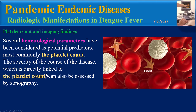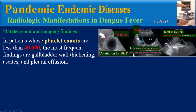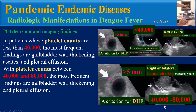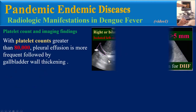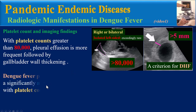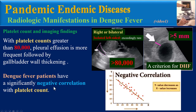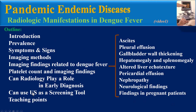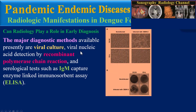Several hematological parameters have been considered as potential predictors of disease severity, most commonly the platelet count. In patients with platelet counts less than 40,000, the most frequent findings are gallbladder wall thickening, ascites, and pleural effusion. With platelet counts between 40,000 and 80,000, the most frequent findings are gallbladder wall thickening and pleural effusion. With platelet counts greater than 80,000, pleural effusion is more frequent followed by gallbladder wall thickening. What is clear is that dengue fever patients show a significantly negative correlation with platelet count.